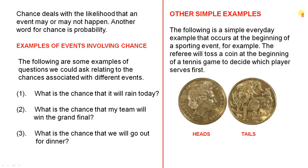Other simple examples. The following is a simple everyday example that occurs at the beginning of a sporting event. The referee will toss a coin at the beginning of a tennis game to decide which player serves first. So just a normal coin would have a head on one side and a tail on the other.